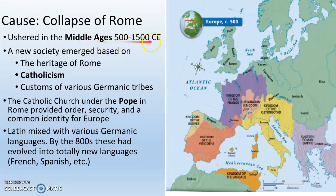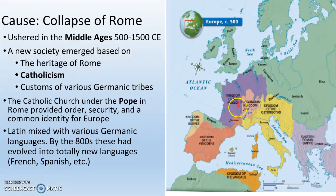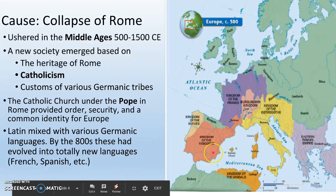The collapse of the Roman Empire in Western Europe is what's going to usher in the Middle Ages, which lasts approximately 500 to 1500 CE. A new society emerges based on three factors: the heritage of Rome — so the laws, the roads left over, that kind of thing — Catholicism, the Catholic Church, and customs of various Germanic tribes. Catholics are the original Christians, and at this point in history, if you were Christian, you were also Catholic, which is just about everybody in Western Europe.